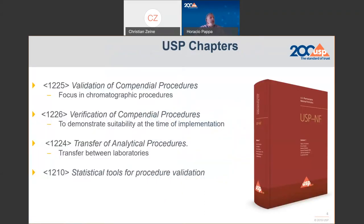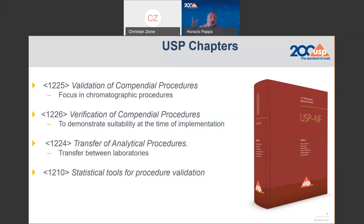Currently in USP, we have four chapters more or less related to the validation of analytical procedures. Those are 1225, Validation of Compendial Procedures—this is the first chapter that was introduced in USP on this topic. The idea is to reproduce more or less the text in ICH Q2, so it's more focused on chromatographic procedures. However, you can adapt the validation protocol in 1225 to different types of methods—not all, but some of them.